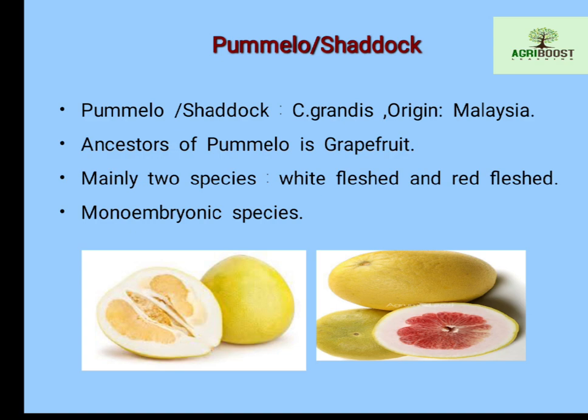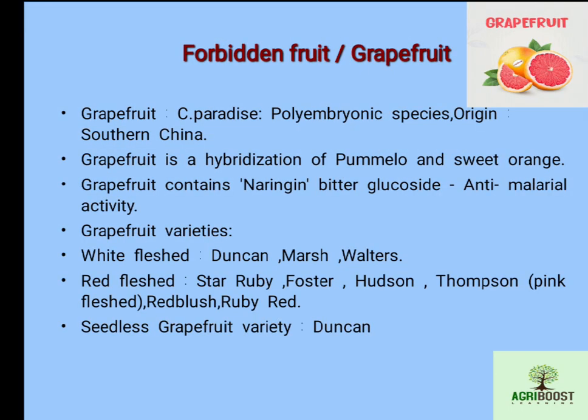Grapefruit, also called forbidden fruit, has the scientific name Citrus paradisi. It is a polyembryonic species and its origin is southern China. Grapefruit is a hybridization of pamelo (Citrus grandis) and sweet orange (Citrus sinensis). Naringin glucoside is present in grapefruit — it is a bitter glycoside with anti-malarial activity and medicinal purpose.